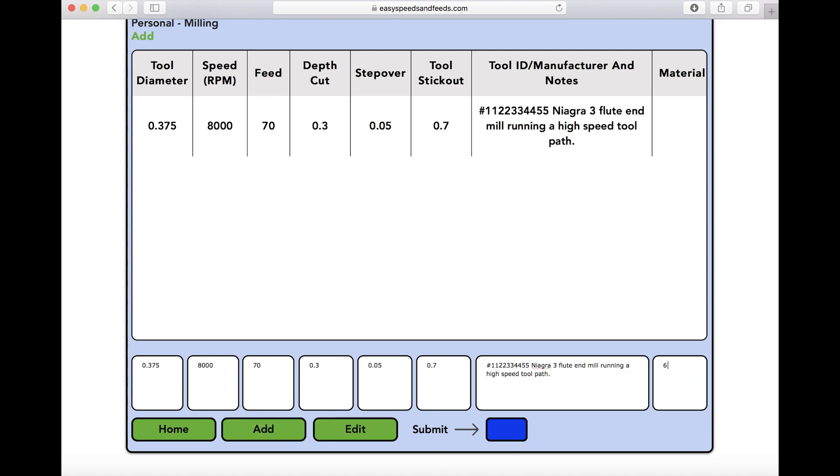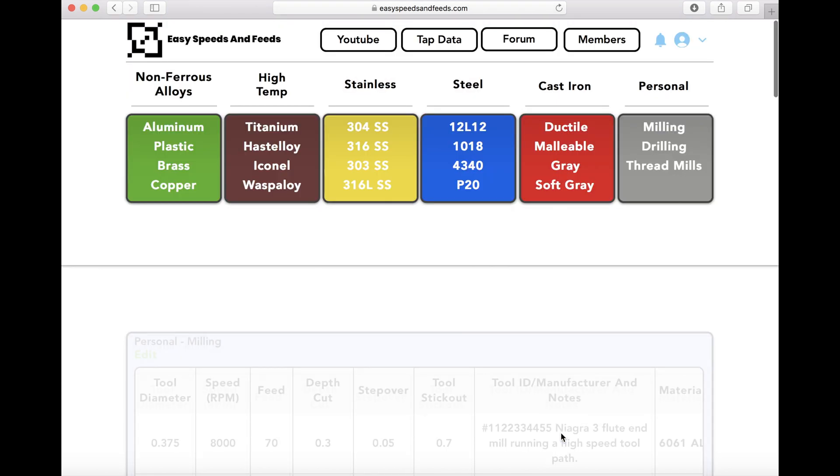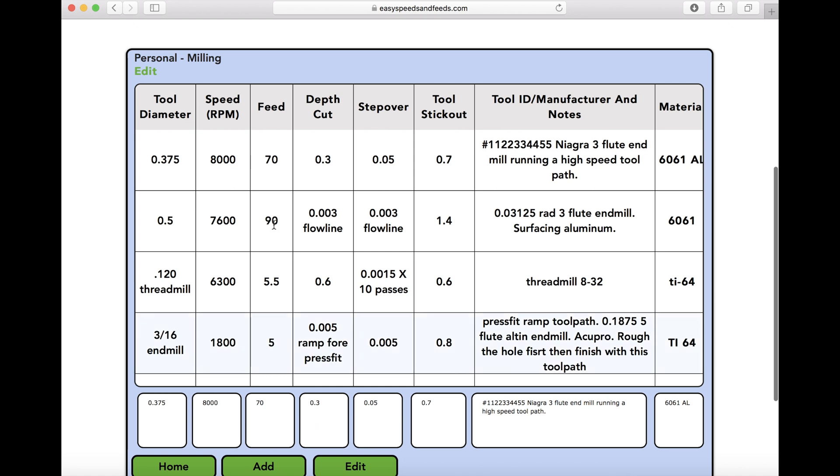That's all we need to know and we can get back and run this job. Type in your material you're machining and click submit. Now you can go over to edit, and if you tweak your speeds and feeds or anything - if you run this tool a little bit different - you can click on it and change things. Let's call it three-eighths. You can change the feed rate, change anything we want, change the step over.